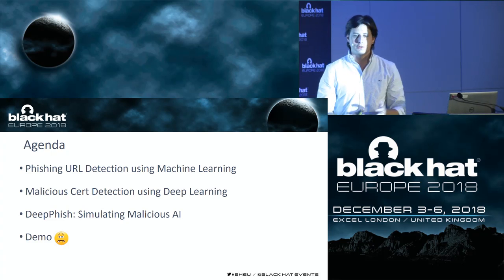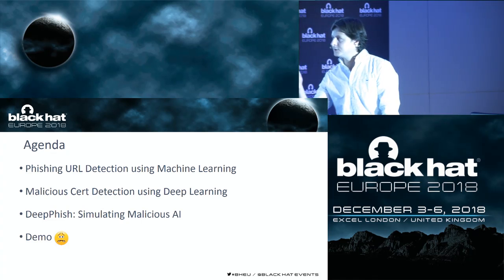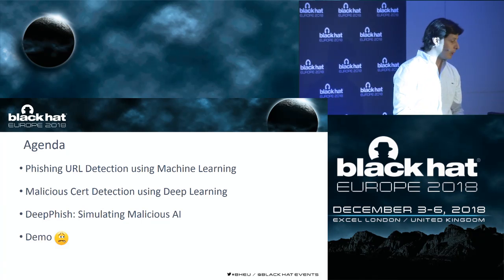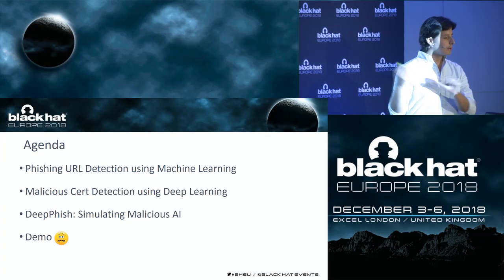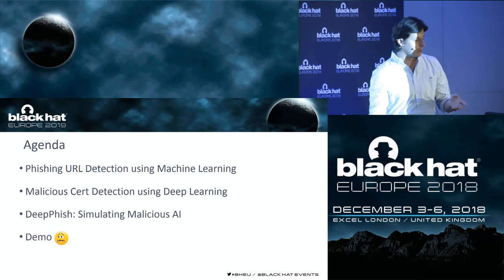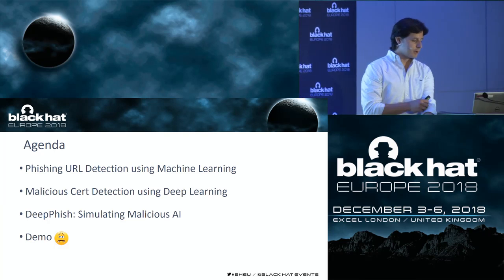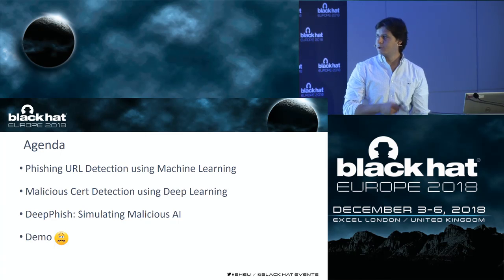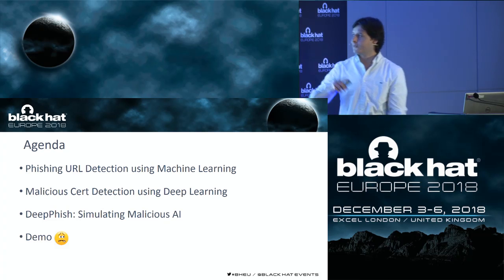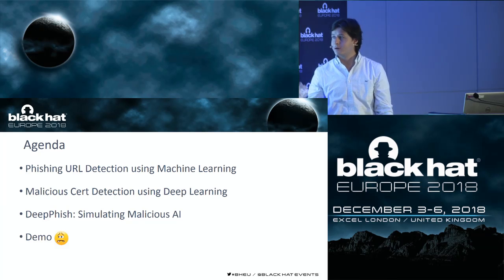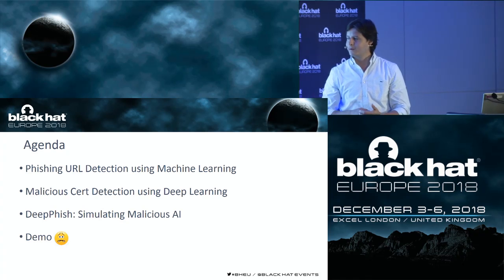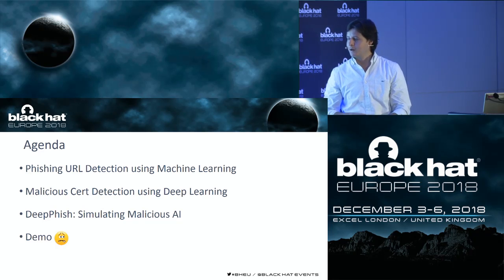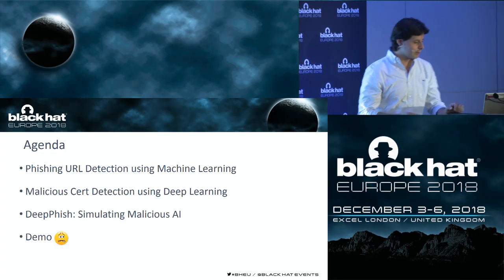What I'm going to talk about today is a summary of three research papers that we wrote this year. Everything I'm going to tell you is actually on those research papers, and most of it I just put yesterday on GitHub, so I will share all of that with you later. First, I'm going to talk about machine learning for detecting phishing URLs, then deep learning to detect malicious certificates, and lastly the final paper — DeepFish, Simulating Malicious AI. For some reason I decided to do a live demo, so let's see how that goes.